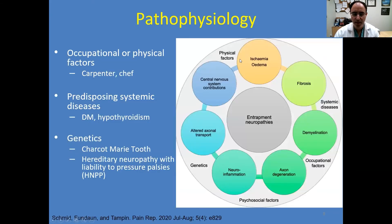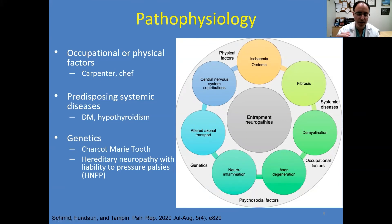This is a nice pictorial representation of the different multifaceted types of factors at play with entrapment neuropathies. We talked about ischemia and edema, which can lead to fibrosis. We discussed focal demyelination at a site of entrapment. Ultimately there can be axon degeneration, atrophy noted on exam, and neuroinflammation. We also discussed the traffic jam concept where at an entrapment site, different axonal proteins being transported basically get stuck and build up. Other overlapping issues include spinal cord or foraminal compression.